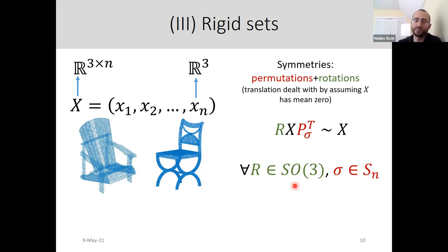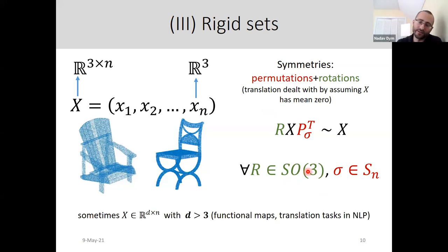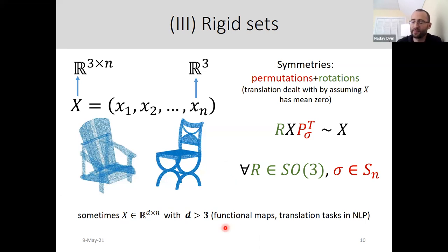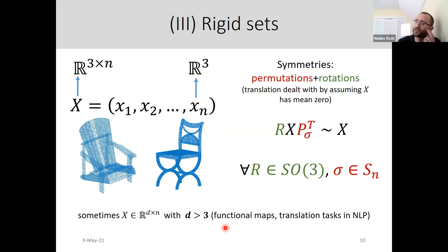The transformation group is now a product of rotations and permutations. One remark: the main application is when d equals 3, but there are also problems with d larger than 3 — for example, in the context of functional maps for shape analysis, or NLP, where you embed your data into a high-dimensional vector but still have rotational symmetry.